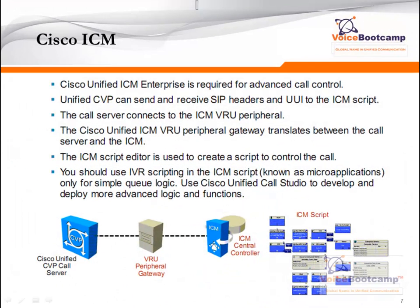Cisco ICM, which is the enterprise contact center solution, is required for advanced call control. CVP can send or receive SIP headers and EUI to ICM scripts. The call server will connect to ICM via the VRU peripheral or PG. The Cisco Unified VRU peripheral gateway translates calls between the server and ICM service. The script editor is used to create scripts to control calls — this is a separate script from the one designed for CVP. You should use IVR scripting in ICM, known as microapplications, only for queuing logic, and use Call Studio to develop and deploy more advanced logic and functions.